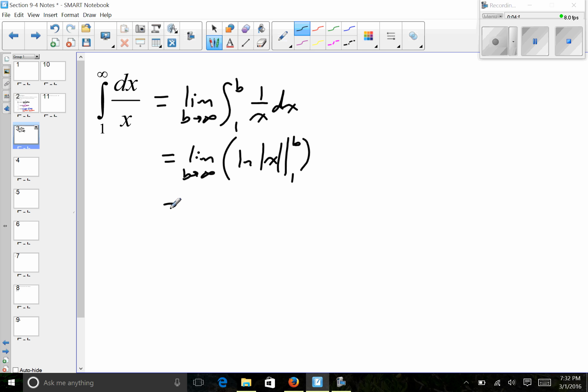So now because I'm going one to bigger positive numbers, I don't need the absolute value here. So again, I haven't found the limit yet, so I still have the limit as b goes to infinity of the natural log of b. Well, the natural log of one is zero, so I don't need to worry about that.